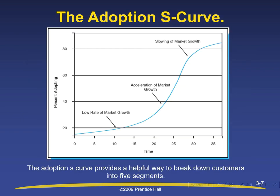The adoption S-curve provides a helpful way to break down customers into five segments. The Y-axis shows percentages from 20 to 80, and the X-axis shows time periods from 0 to 35. Traveling from 0 to 10 is classified as a low rate of market growth. Just before 40% adoption is called acceleration of market growth. And just before time period 30, with just under 80% adopting, it is called the slowing of market growth.